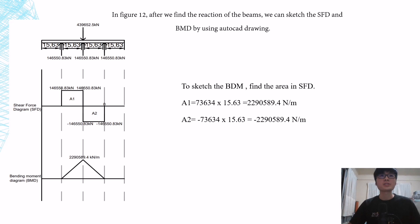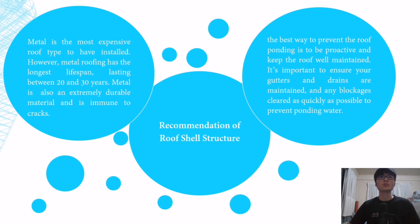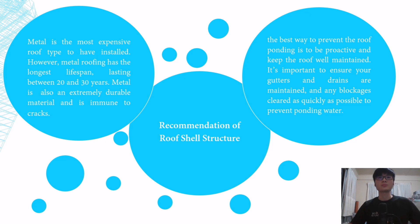After we calculate the reactions, we need to sketch the shear force diagram and the bending moment diagram. For the recommendation of the roof shell structure, the best way to prevent roof ponding is to be proactive and keep the roof well maintained. It is important to ensure the gutters and drains are maintained and any blockage cleared as quickly as possible to prevent ponding water. Metal is the most expensive roof type; however, the metal roof has the longest lifespan, lasting between 20 to 30 years, and is extremely durable and immune to cracks.